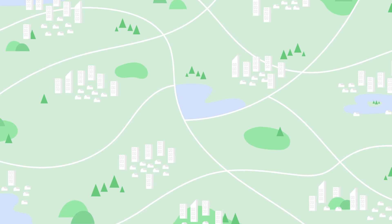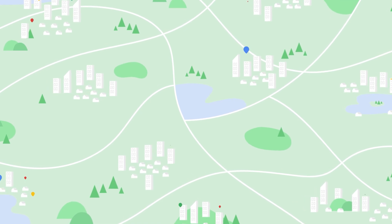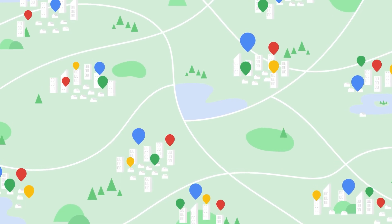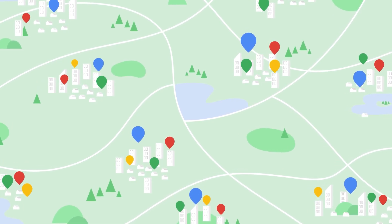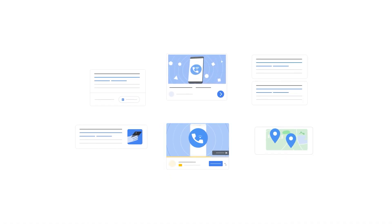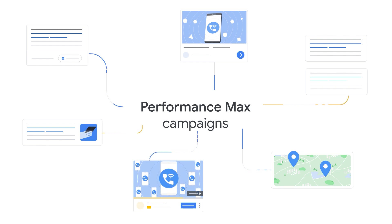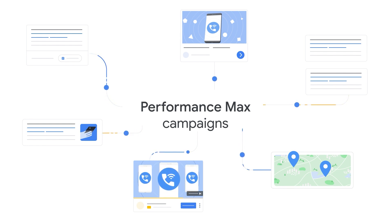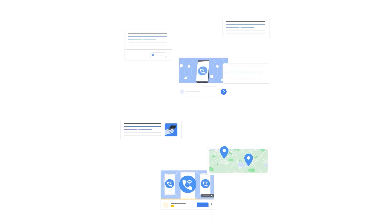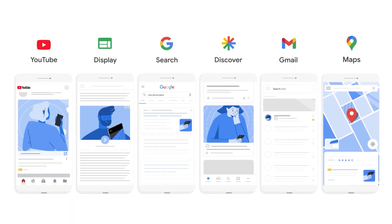That's why more and more advertisers are turning to automation to engage customers effectively and at scale. Performance Max is a goal-based campaign type that works across all Google ad channels. It uses the best of Google's automation capabilities, including Smart Bidding, to help you drive better performance and find more converting customers across Google's advertising channels.